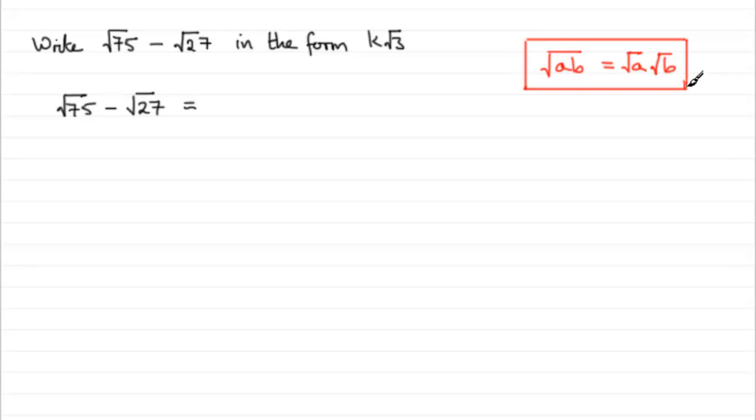And so how do we work with this here? Well, it's got to have something to do with 3, 3 being a factor of 75. And we can see that 25 times 3 is going to give us 75. So we can think of this as the root of 25 multiplied by 3.